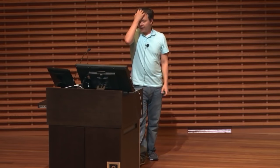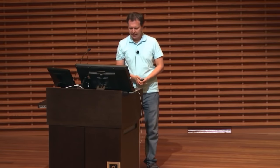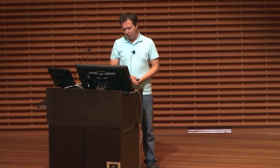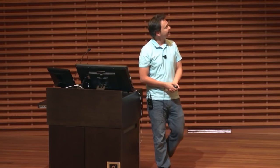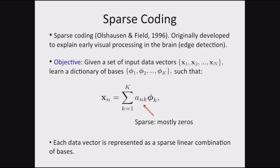Sparse coding is one of the models that I think everybody should know. It has roots going back to 1996, and was originally developed to explain early visual processing in the brain — I think of it as an edge detector. The objective is: given a set of data points x1 through xN, you want to learn a dictionary of bases φ1 through φK, so that every single data point can be written as a linear combination of the basis. The one constraint is that you want your coefficients to be sparse — mostly zero.